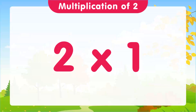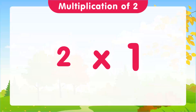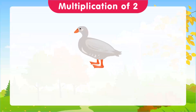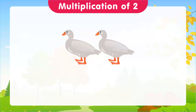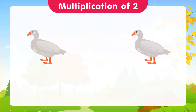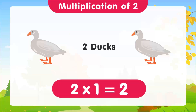Let's start with the first multiplication of 2. We're going to use ducks. Let's imagine we have 2 ducks. How many ducks do we have in total? 2 ducks. And that's our first multiplication: 2 times 1 is equal to 2.